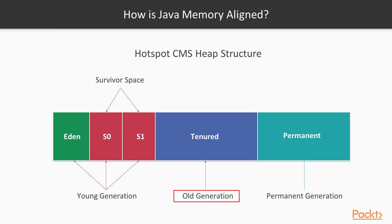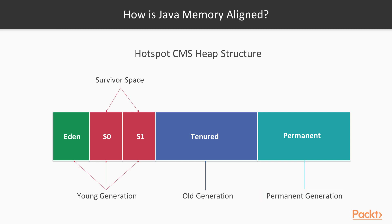There is also a third memory area called the permanent generation. In this permanent generation, static things and objects that live from the start of the JVM to the end of the process are located — things like strings allocated for the first time, static objects, and so on. Garbage collection does not go into that specific space.